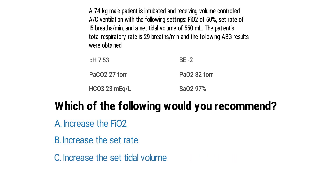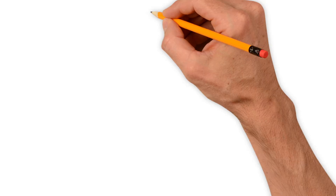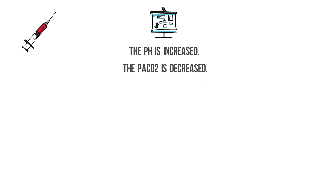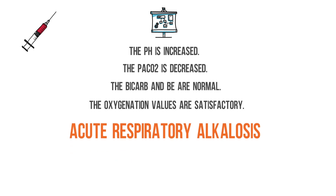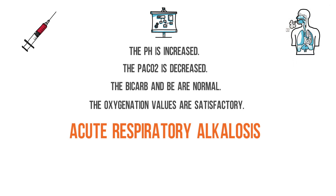Which of the following would you recommend: A) increase the FiO2, B) increase the set rate, C) increase the set tidal volume, or D) add mechanical dead space? The first thing you should do is interpret the ABG results. The pH is increased, the PaCO2 is decreased, the bicarb and base excess are normal, and the oxygenation values are satisfactory. This ABG can be interpreted as acute respiratory alkalosis, meaning the patient is hyperventilating and blowing off too much CO2, causing the pH to be elevated.